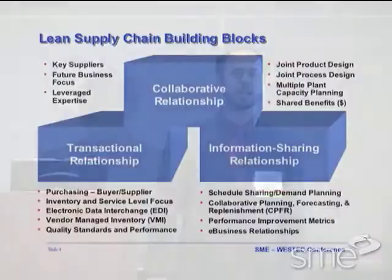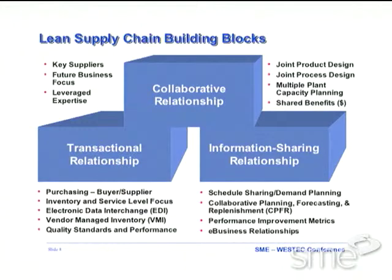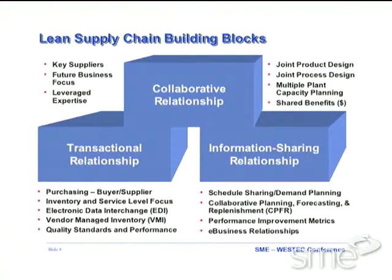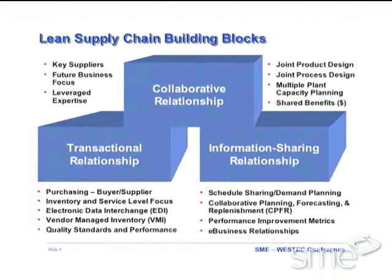We'll talk about the lean supply chain building blocks. At the base, you see a transactional relationship, moving to an information sharing relationship, and finally a collaborative relationship. A transactional relationship is fairly traditional — what you normally see in supply management — where it's a purchasing-type organization with a buyer-supplier focus, looking at inventory levels, service levels, electronic data interchange, vendor management, quality standards, and performance.